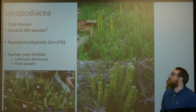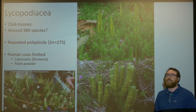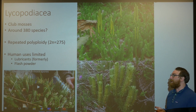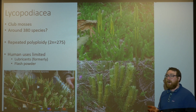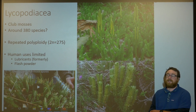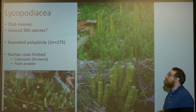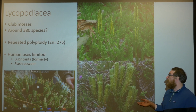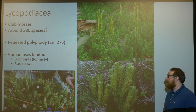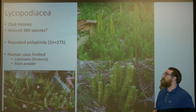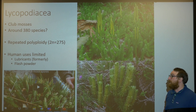The Lycopodiaceae, known as the club mosses, probably have around 380 species, but because of modern genetics we don't have a good grip on what constitutes a species anymore. What's been particularly problematic is that the ploidy numbers are really out of control and seem to vary from population to population. We think that many of these have had repeated events where chromosome counts have doubled and tripled. In fact, in some Lycopodes it's not uncommon for an individual to have over 275 chromosomes.